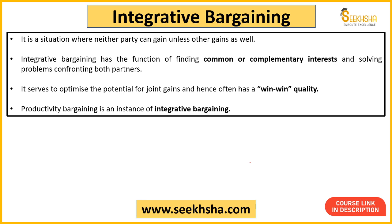Integrative bargaining is a situation where both parties benefit. One party will not gain until the other party also has some benefit. So integrative bargaining talks about common interest or complementary interest — creating a win-win situation. Productivity bargaining is an example of integrative bargaining: employees agree to improve productivity, and in return the employer gives something to the workers — for example better salary or better work environment. The worker gets increased salary and the employer gets improved production — so a win-win situation is created.